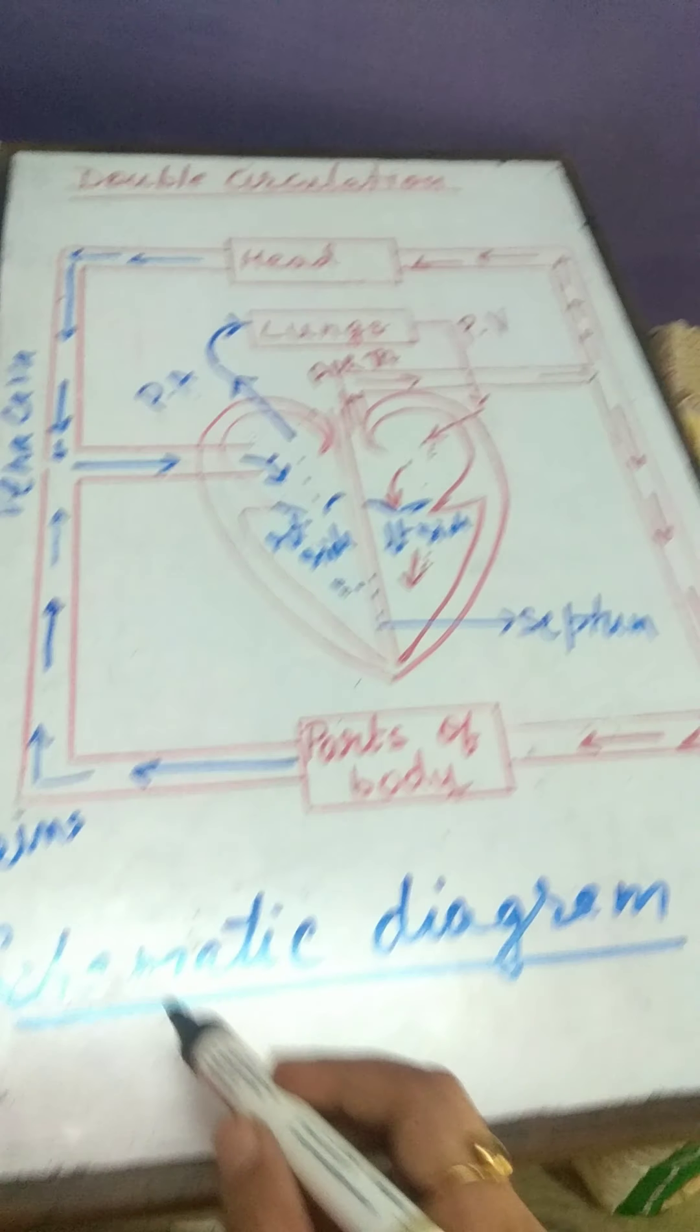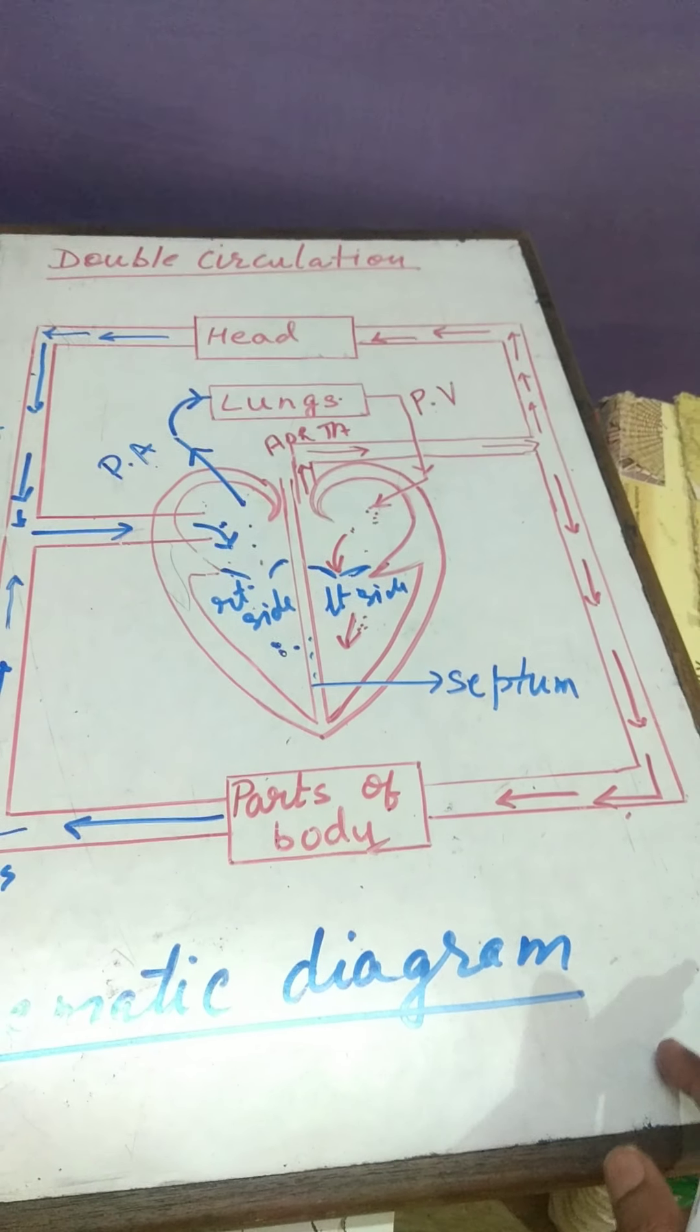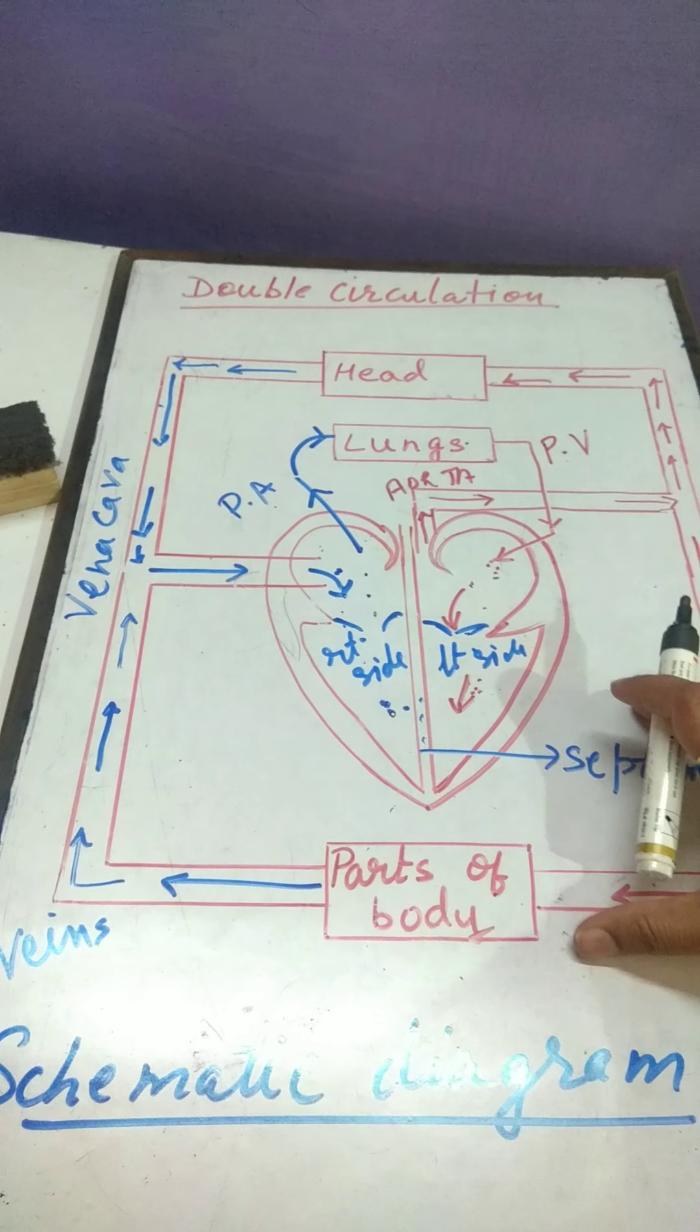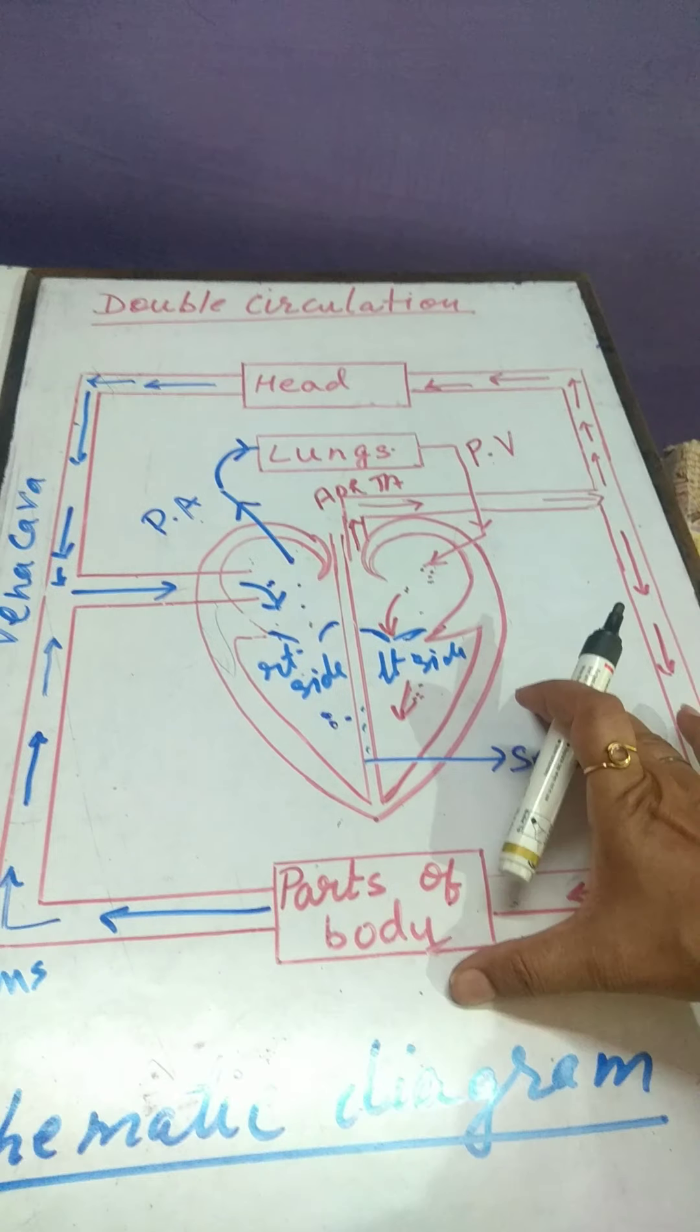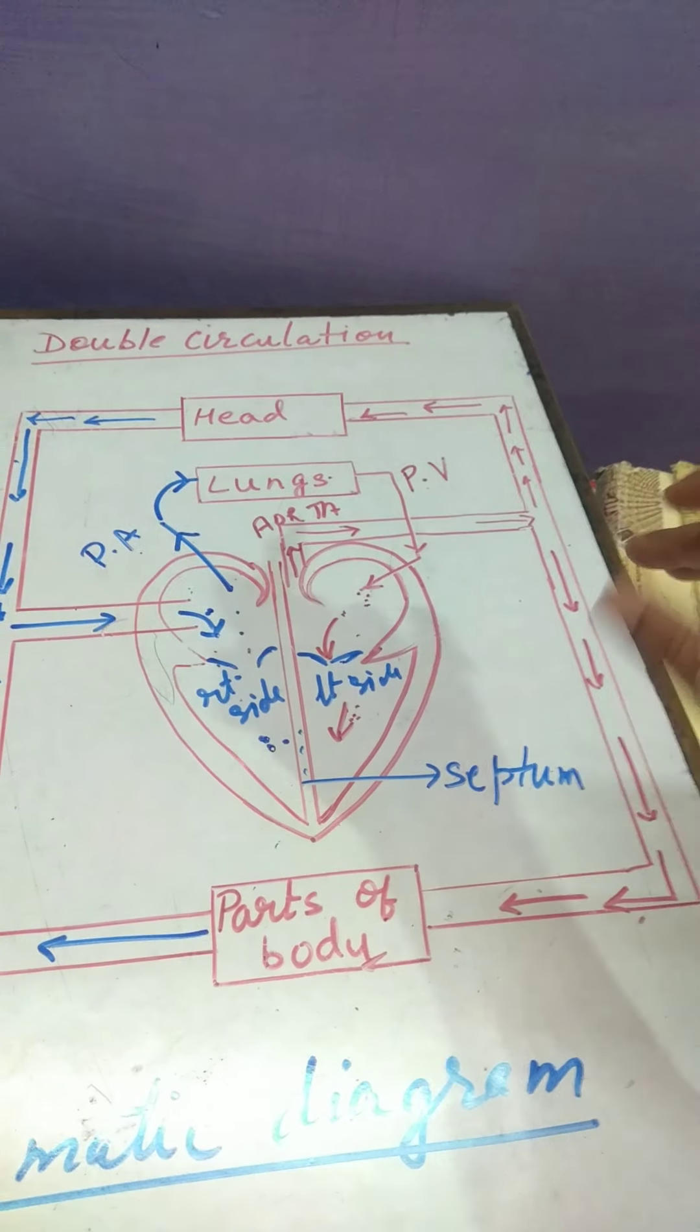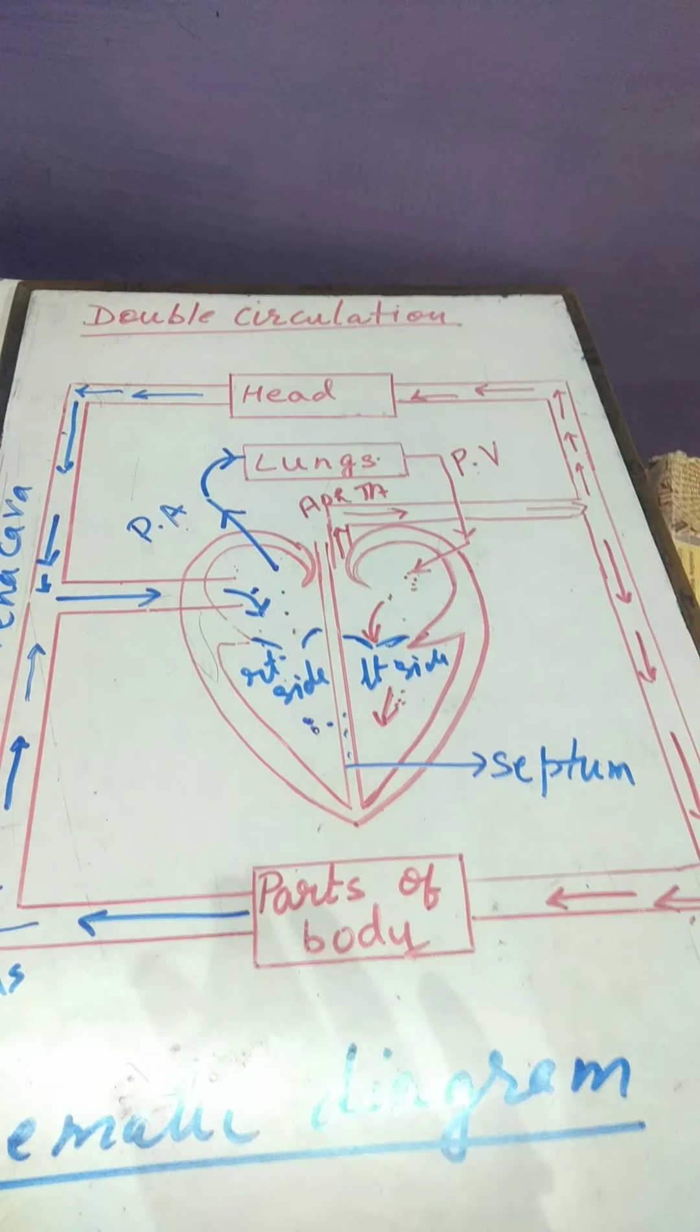And this diagram, it is not given in your book. This diagram is known as schematic diagram of double circulation or we can say schematic diagram showing working of heart. It is asked in the board exams also. So, you have to draw. You should draw this diagram in your copies with proper labeling. Once, if you learn this diagram only, the whole working of heart is very easy. Even in board exam, if you are going to draw this diagram with proper labeling and arrows, everything, you will get full marks.